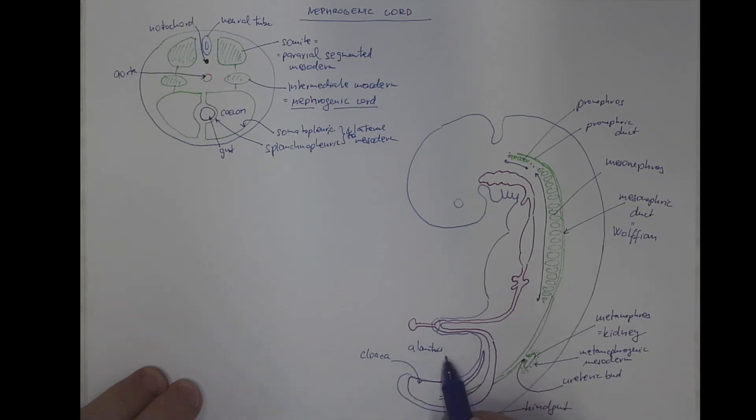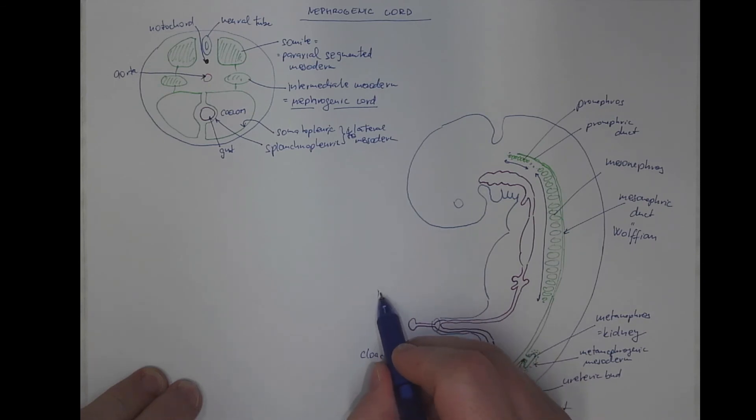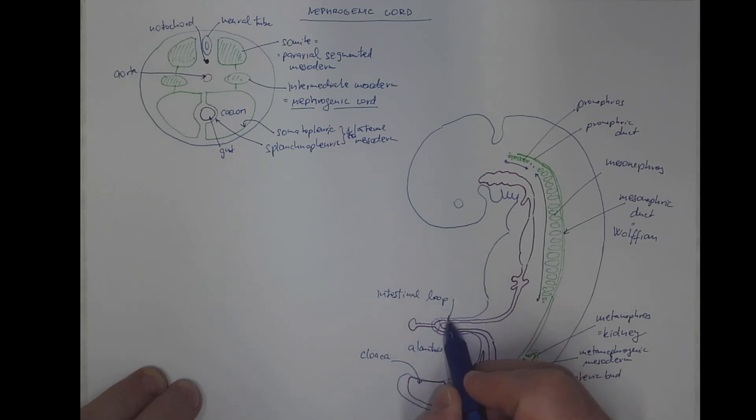A rudimentary fetal membrane. And this is the intestinal loop, as a part of the physiological umbilical hernia.